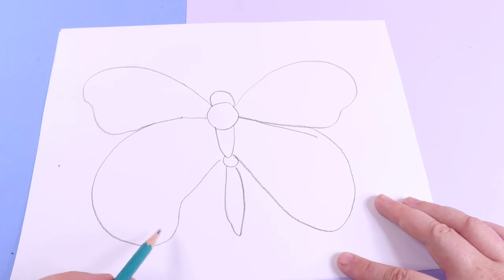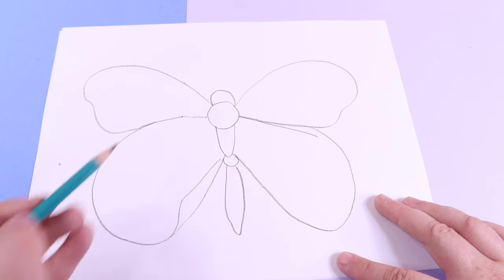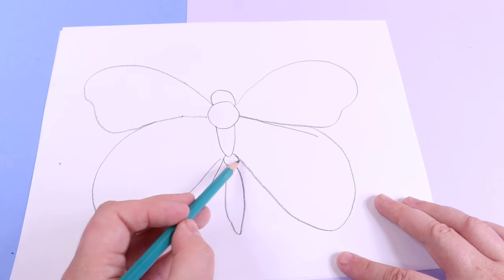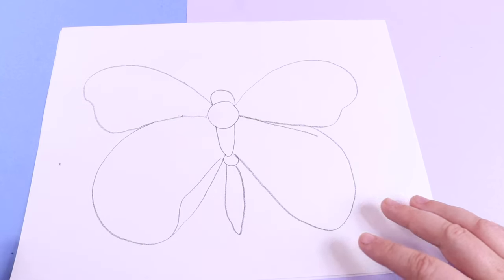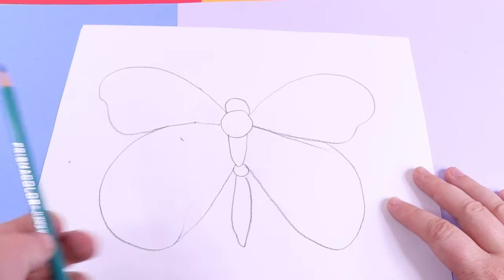I'm not very happy with this shape, so I'm going to go ahead and draw it a little bit bigger and erase this extra line. This butterfly is starting to look really good.